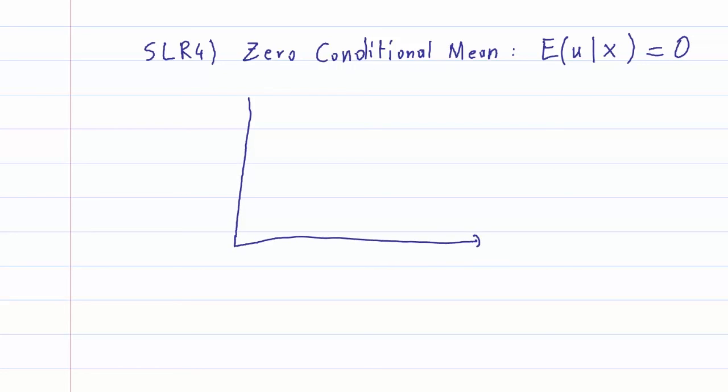The fourth assumption, SLR4, is a zero conditional mean. It means that the expected U given X should be zero. What happens if it's not the case? X, Y.